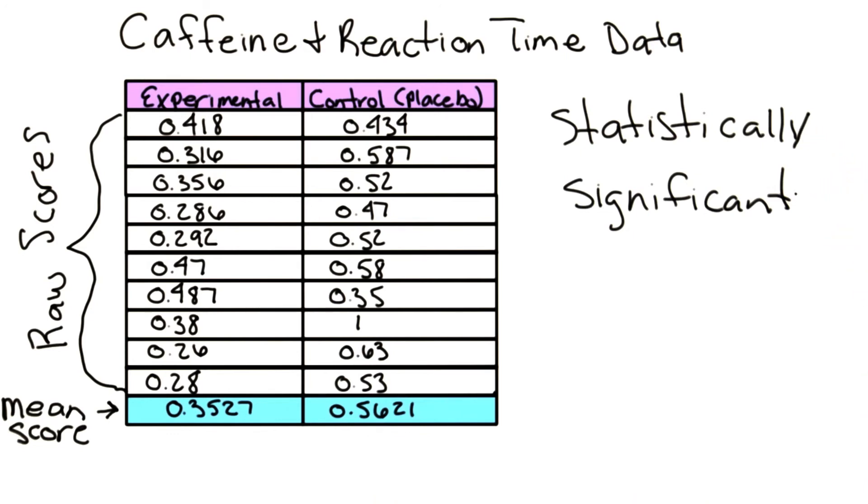But what does that mean? It means that it is highly unlikely that the scores we observed were due to chance. So again, in this caffeine and reaction study, we can say that the significant difference between 0.3 and 0.5 seconds occurred most likely because of the caffeine, and not because of some other variable.